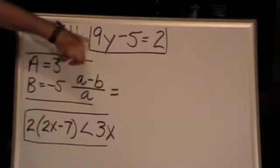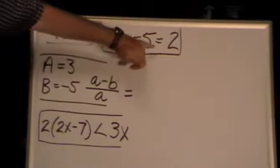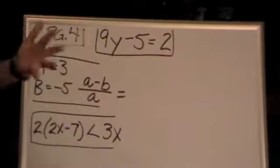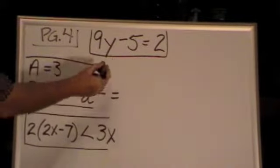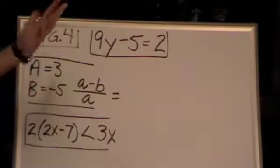Look right there, up top. 9y minus 5 equals 2. This is a simple transposing problem. We want to find y. What do we get rid of first?